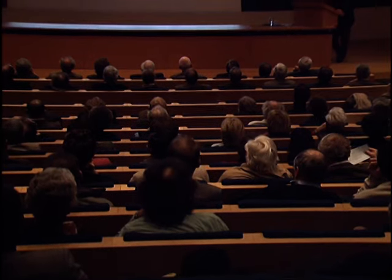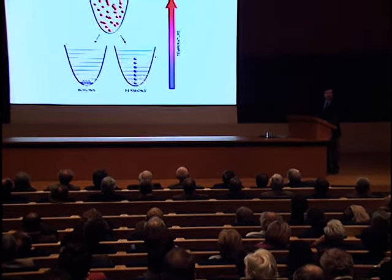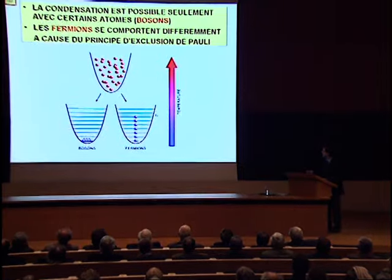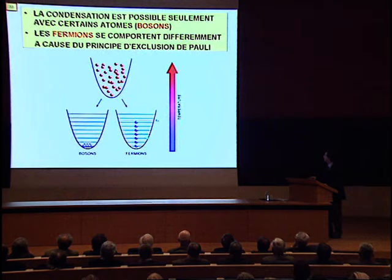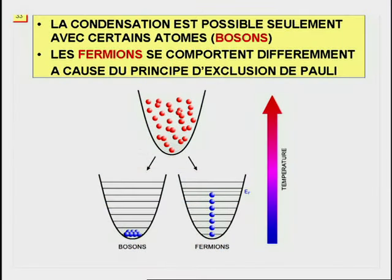Le phénomène de la condensation de Bose-Einstein dont on a parlé jusqu'à présent est possible seulement pour certains atomes dits les bosons. La nature divise les particules en deux classes, d'un côté les bosons et de l'autre côté les fermions. Les fermions se comportent différemment par rapport aux bosons à cause du principe d'exclusion de Pauli, principe qui interdit à deux fermions d'occuper le même état quantique et donc la même onde de matière.